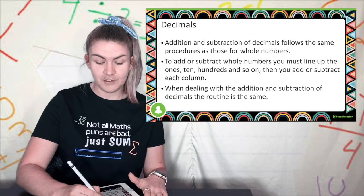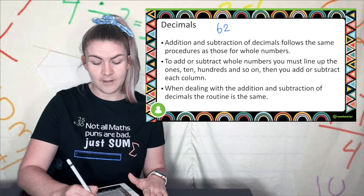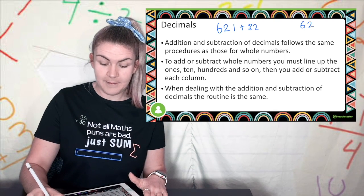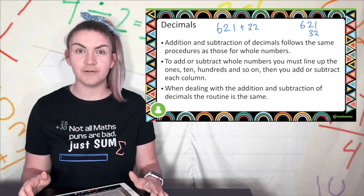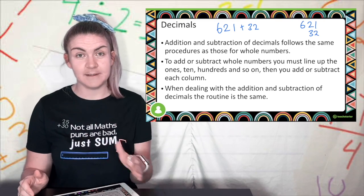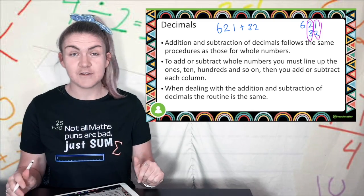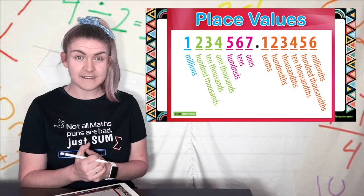You might have thought if you were told to add 621 plus 32 that you should line up the last number. This is technically true but I don't want you to think about it like the last number but rather that you were lining up the ones place then decimals will be exactly the same. Here's our place value chart.